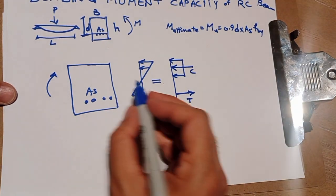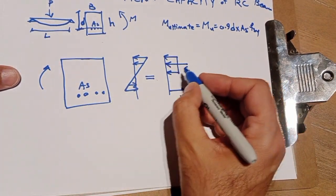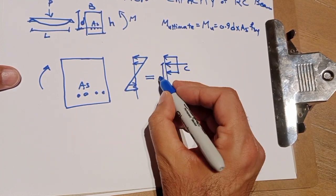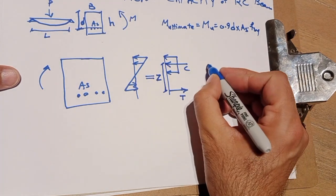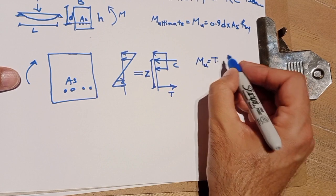So for simplicity, we assume there's no compression steel. In this case, we have Z, distance between center of compression to center of tension, and Mu is T times Z.